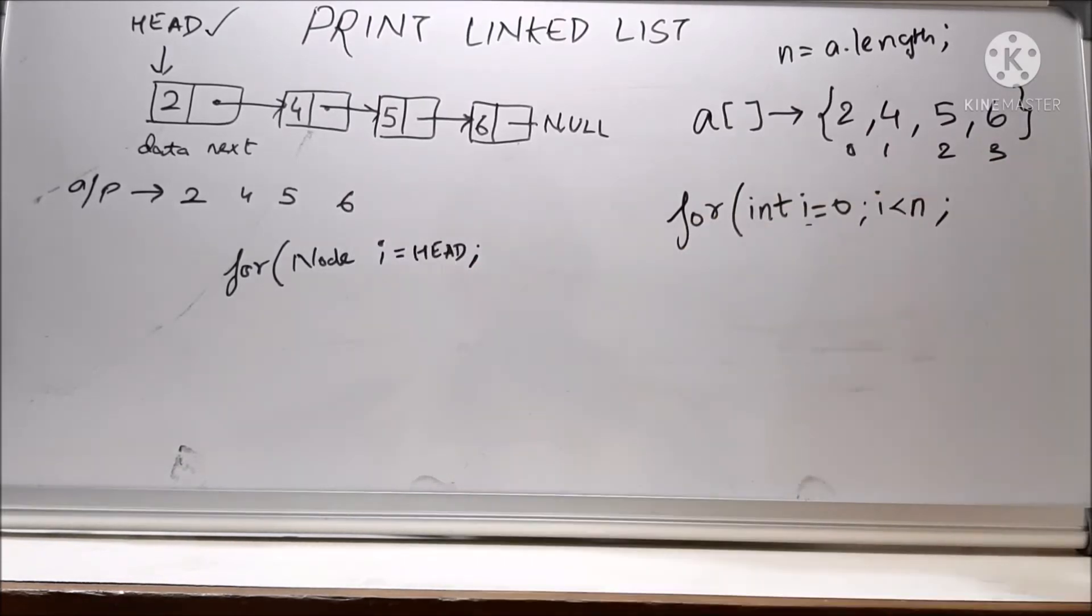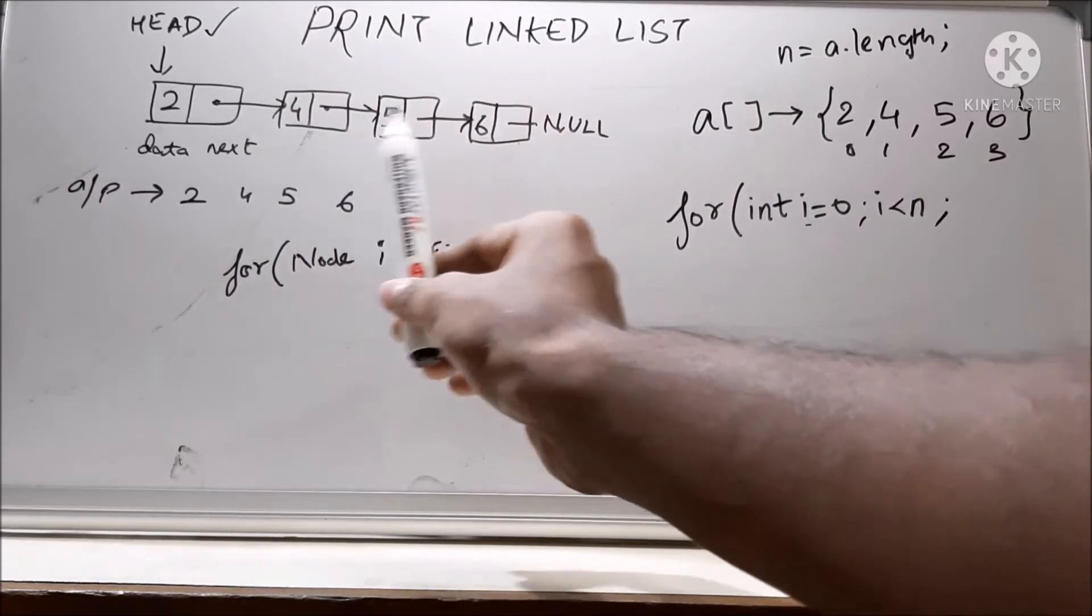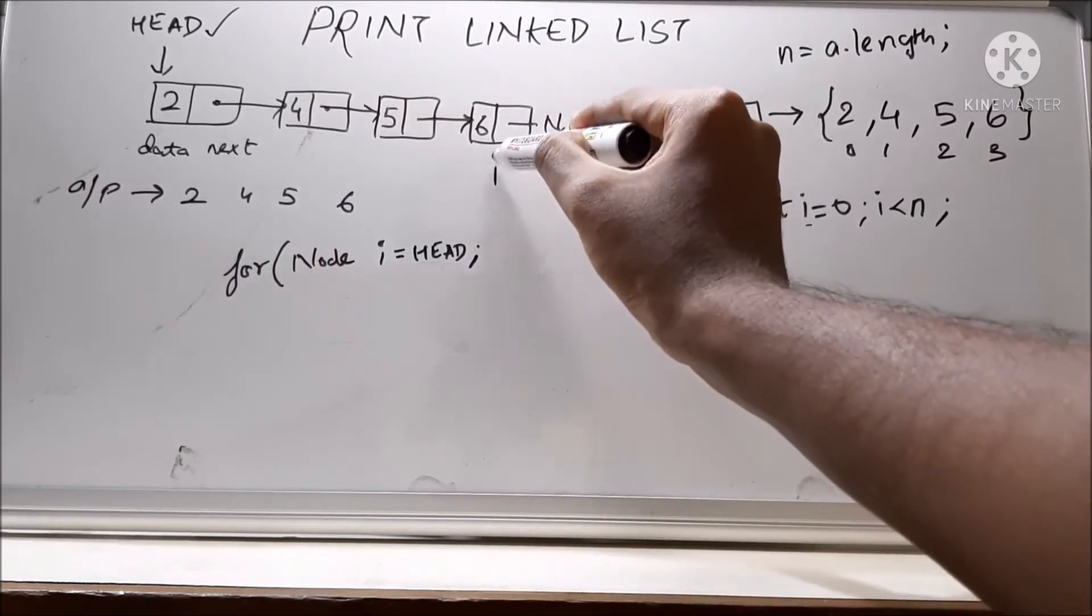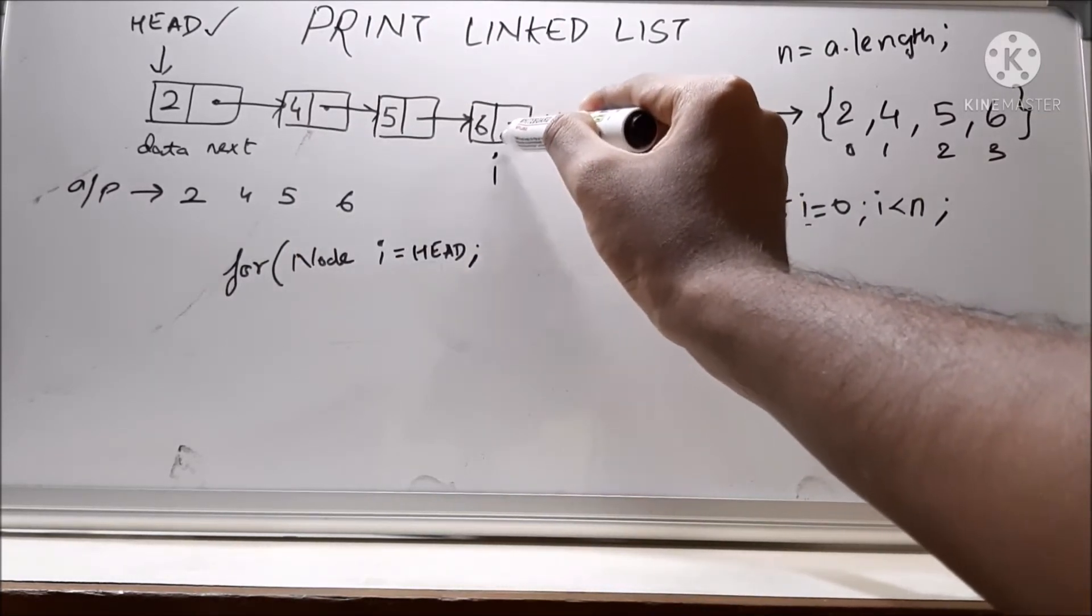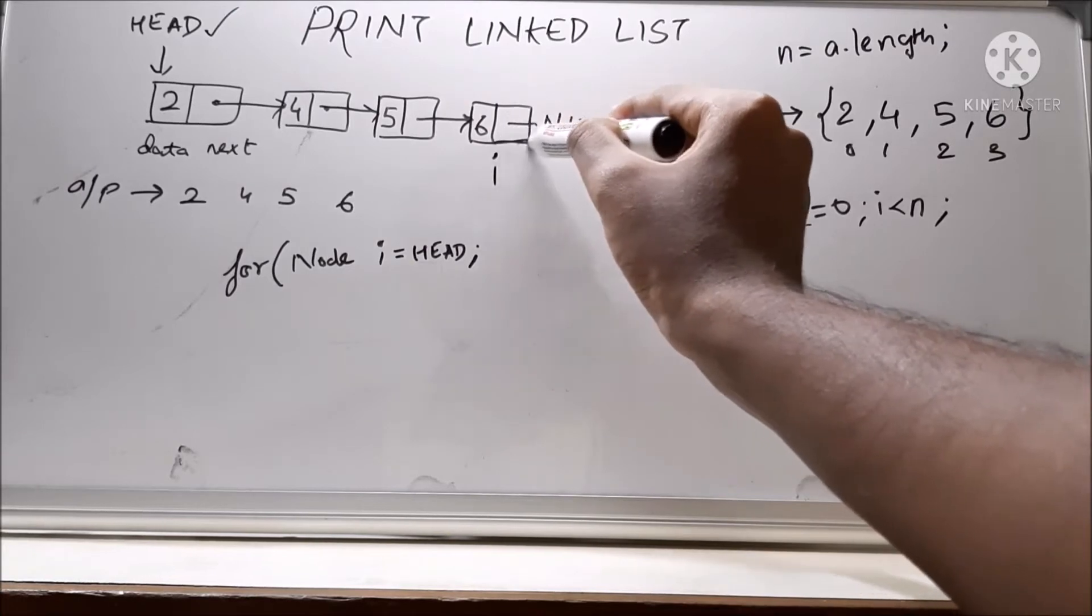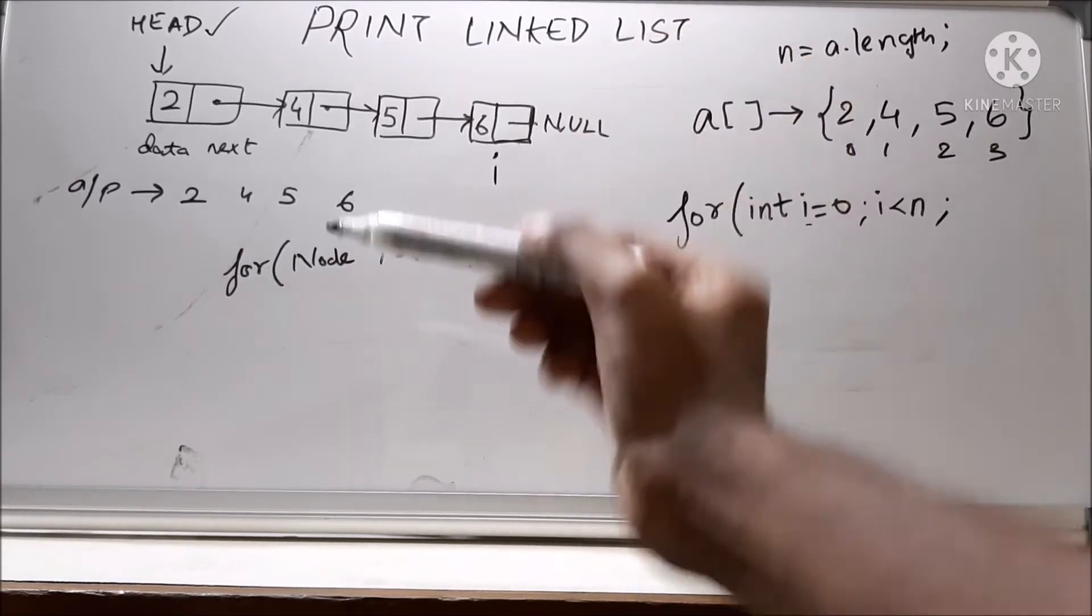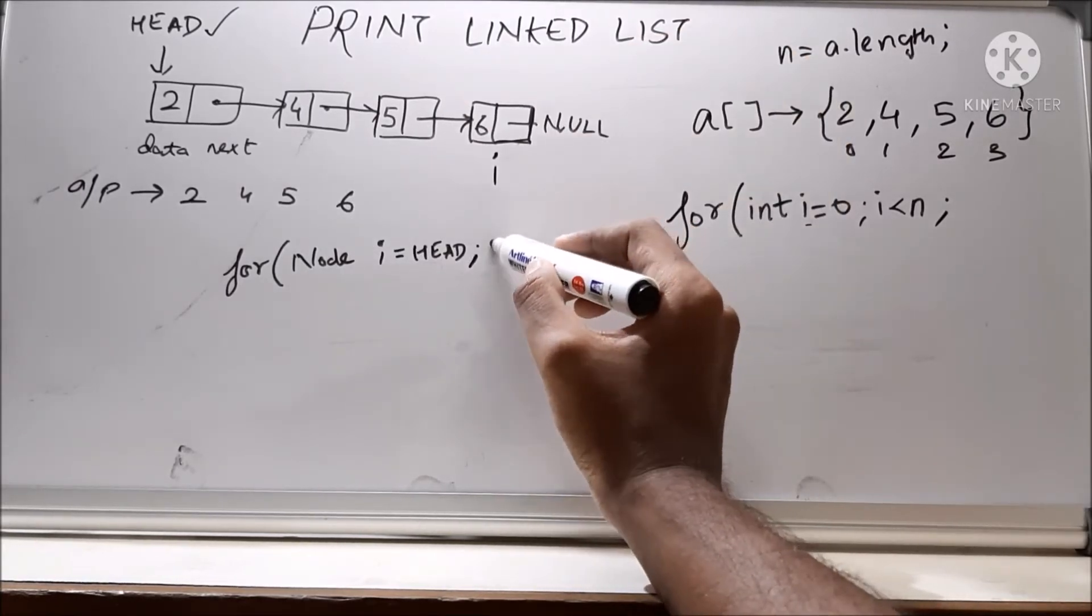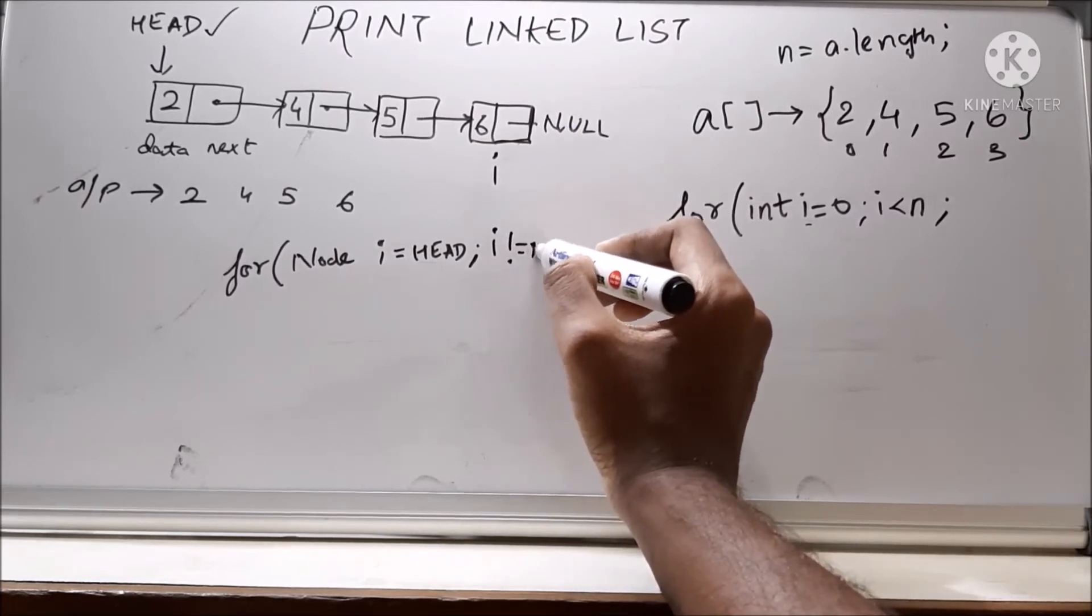And here what we have to do, now i has to move till the last element, right? You can see that when i reaches over here, and we can see that the address part of this is null. So we will say until i is not equal to null, we have to traverse.